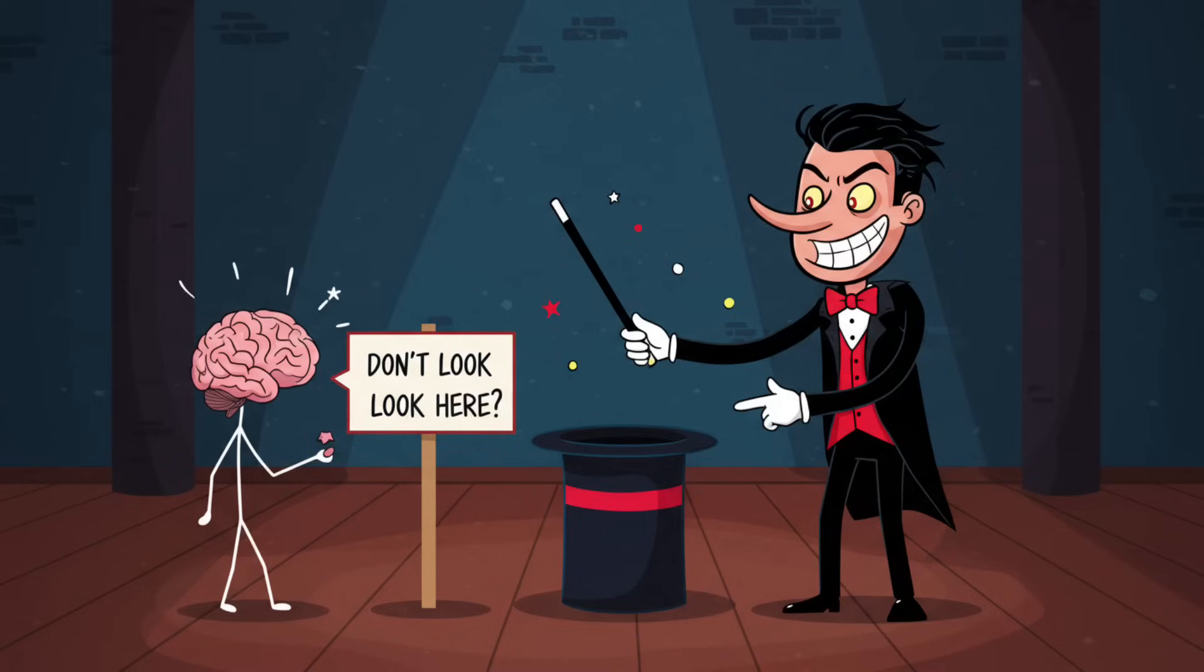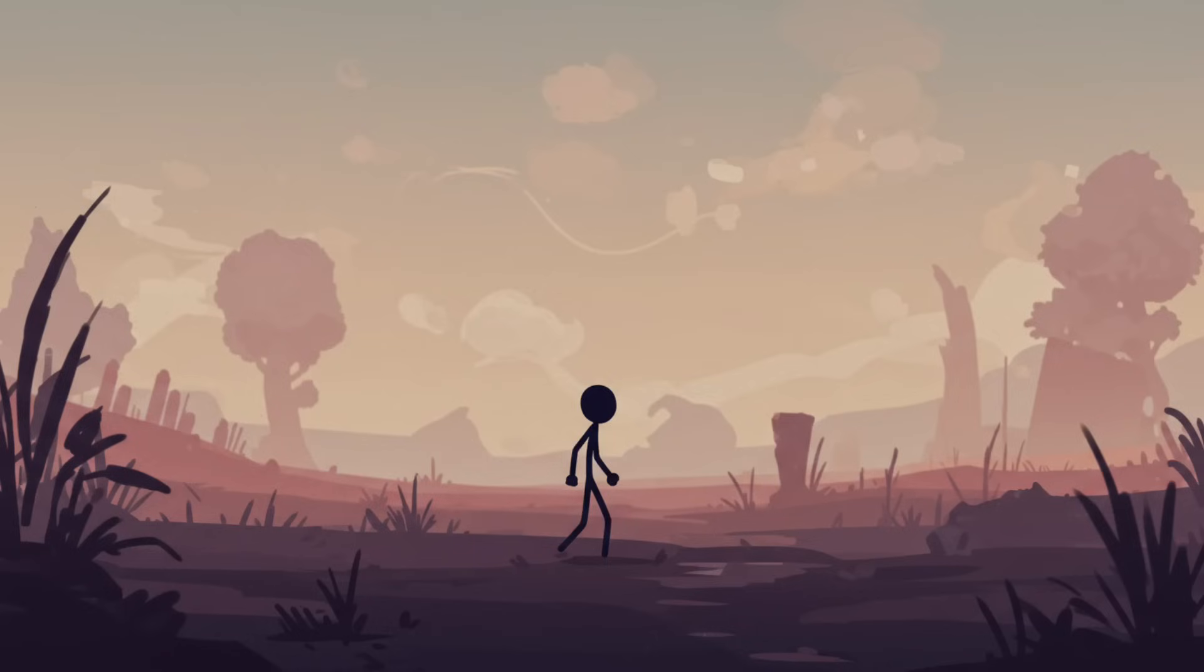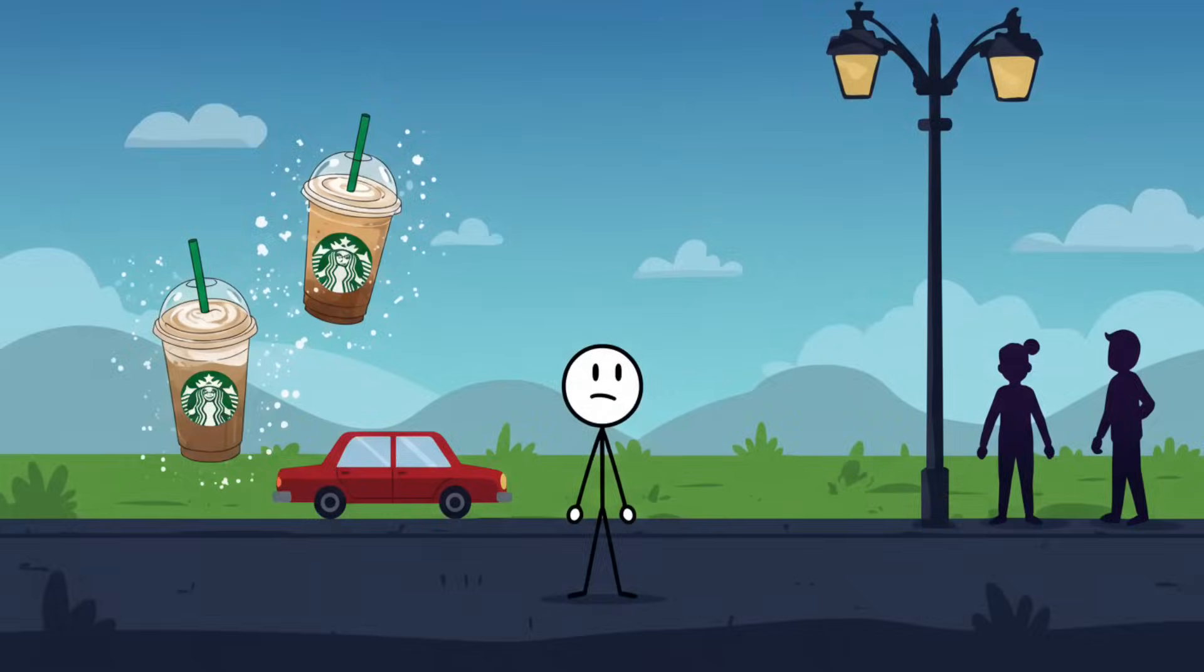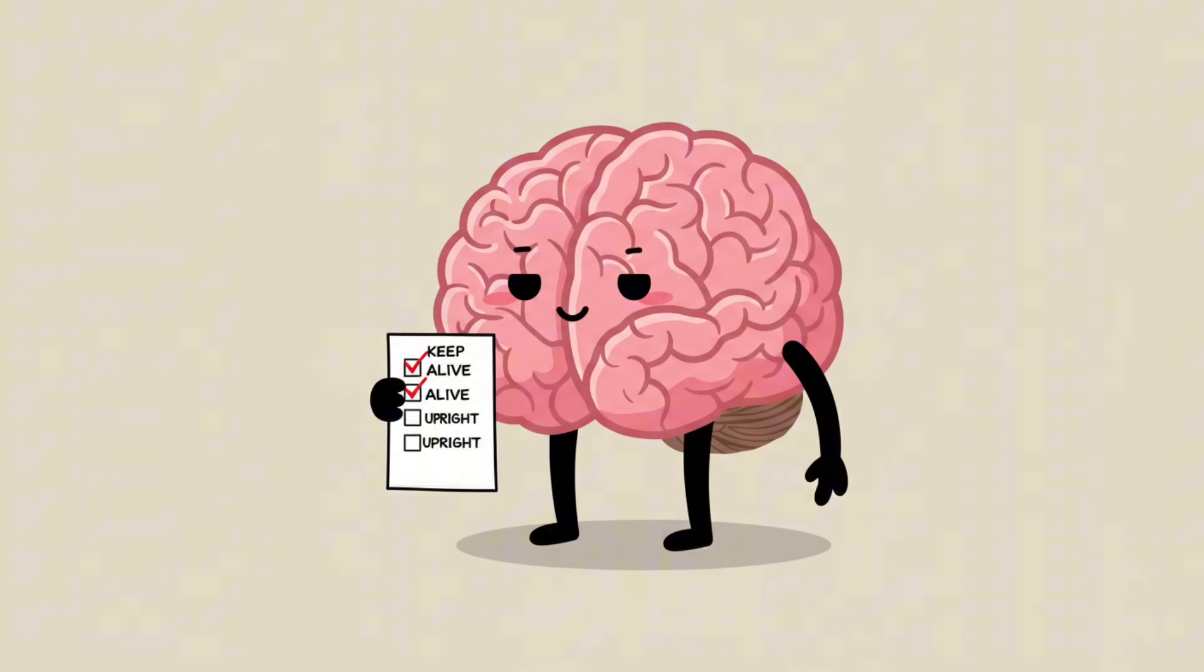The takeaway? Your vision is a lot less faithful than you think. You're living in a slightly hallucinated version of reality, and the world can swap in frappuccinos, red cars, or even entire humans without your conscious awareness. Your brain is basically the lazy roommate of your eyes, doing the bare minimum to keep you alive and mostly upright.